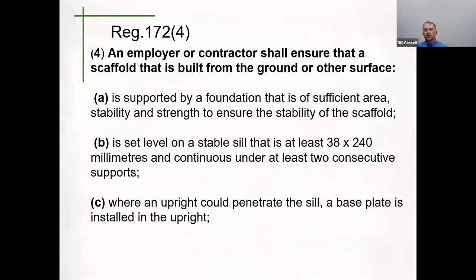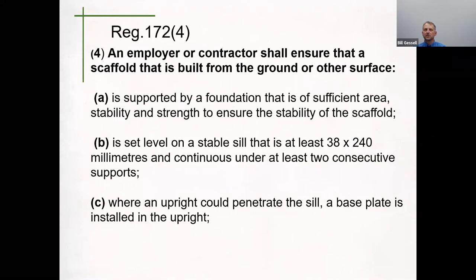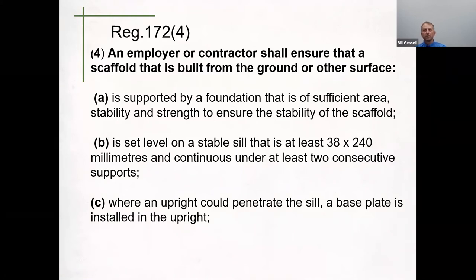Once you've selected the appropriate frames, one thing we often see when we conduct our site inspections is that scaffolding is placed on insufficient sills. Regulation 172 says that an employer contractor shall ensure that a scaffold built from the ground or other surface is supported by a foundation of sufficient area, stability, and strength to ensure the stability of the scaffold, and that it is set on a stable sill that is at least 38 by 240 millimeters and continuous under at least two consecutive supports. If you're building frame scaffolding on the exterior of a building placed on made-up ground, it needs to be properly set on a 38 by 240 — a 2 by 10 piece of material — that is consecutive under two supports, running from one leg of the scaffold to the other.